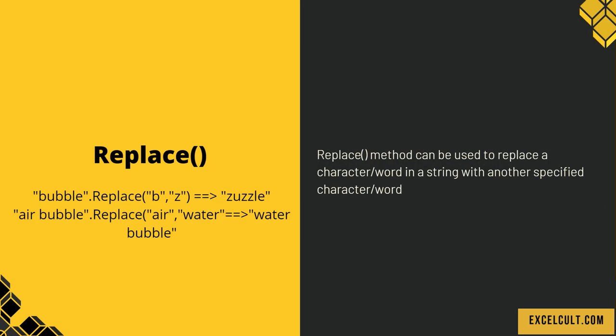Replace. The replace method can be used to replace a character or a word in a string with another specified character or word. As you can see in the examples, we have a word 'bubble' and we are trying to replace 'b' with 'z', so it becomes 'zazzle'. And then in 'air bubble', replacing 'air' with 'water' makes it 'water bubble'.